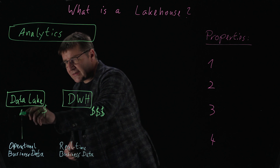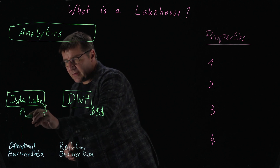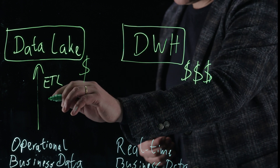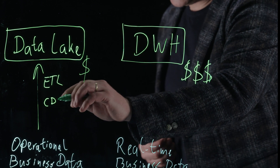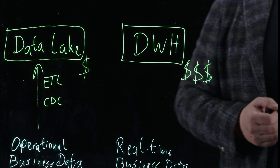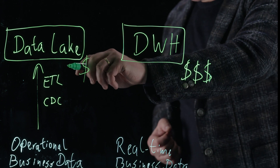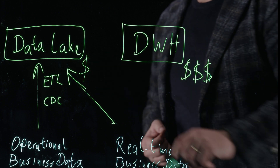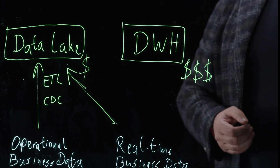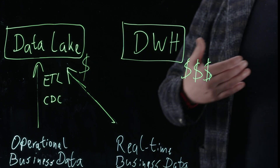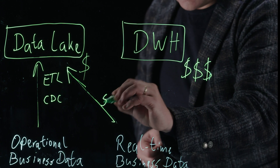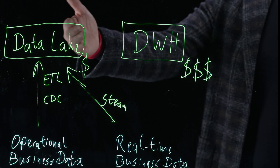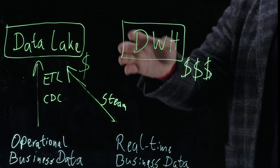The way you get this data into a data lake is by means of either ETL — extract, transform, and load — or in a real-time manner by change data capture, or CDC. But you can also take data from message buses such as Kafka, where data is coming in real-time, for instance IoT messages and things like that. In that case, you're streaming this data in — doing stream data ingestion into your data lake.